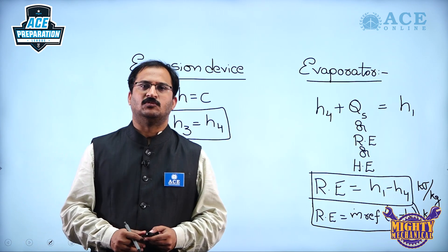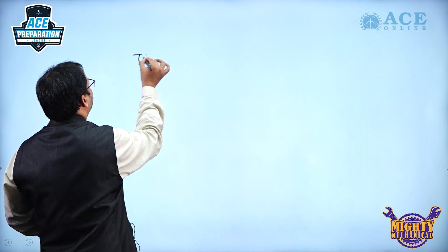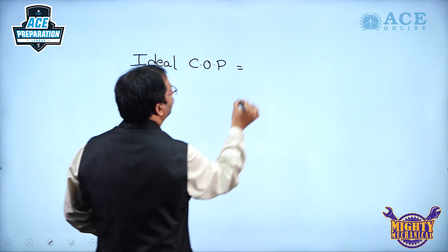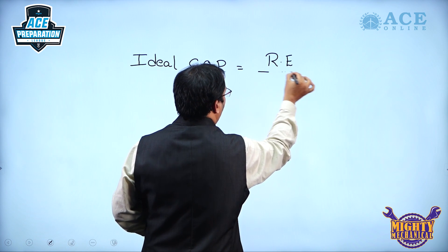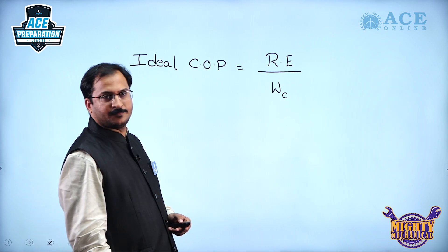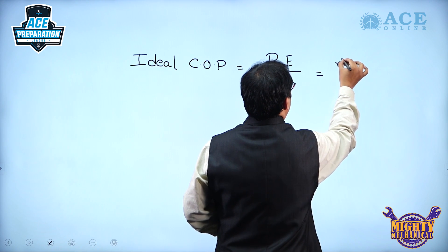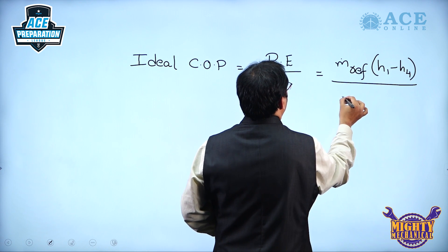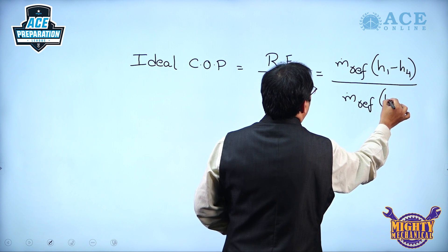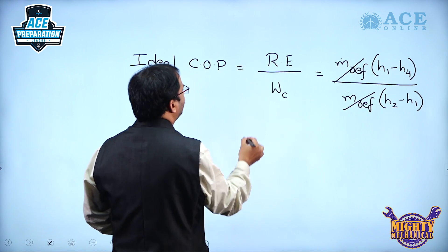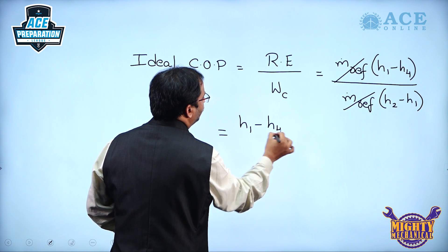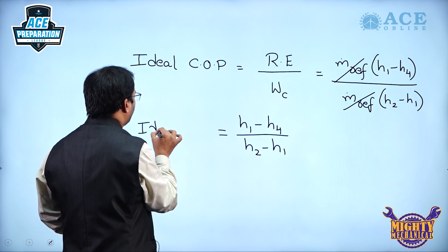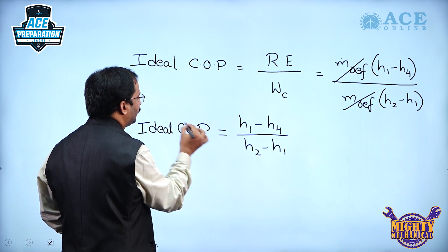Now, the ideal COP of the simple vapor compression refrigeration system is the refrigerating effect divided by the work input to the compressor: COP = (ṁ × (H1 − H4)) / (ṁ × (H2 − H1)). The mass flow rates cancel, giving the ideal COP as (H1 − H4) / (H2 − H1).